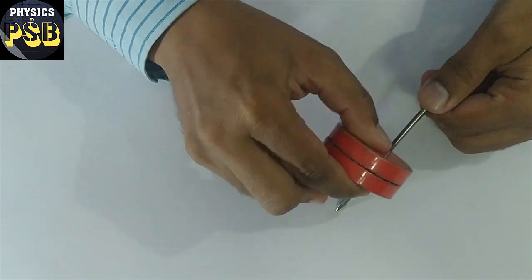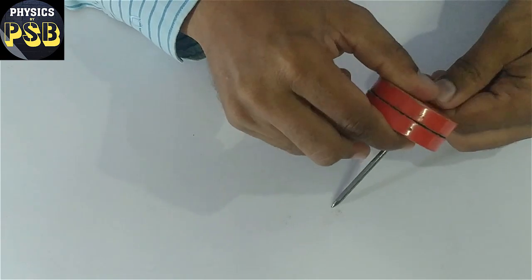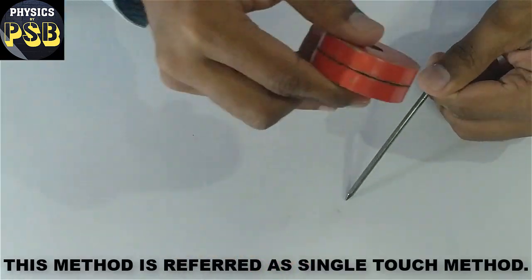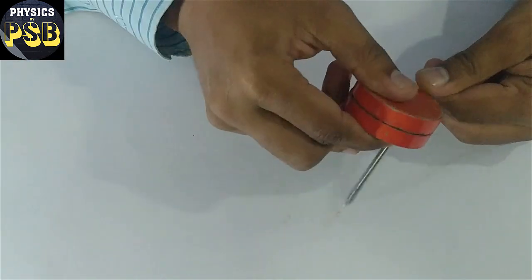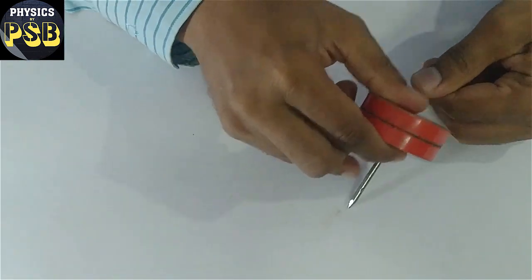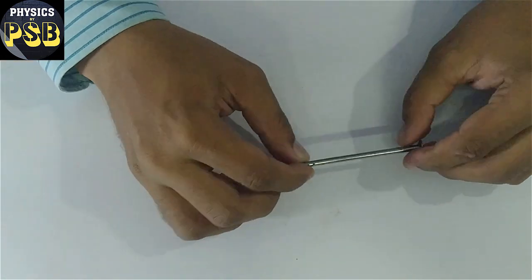This method of magnetizing any iron object is referred to as the single touch method. Okay, that is enough. Now let me check whether this nail has turned into a magnet or not.